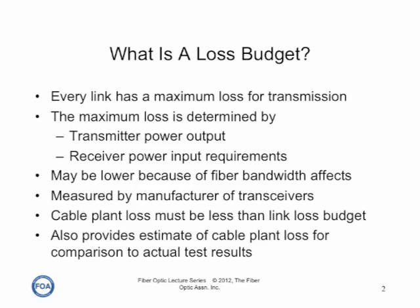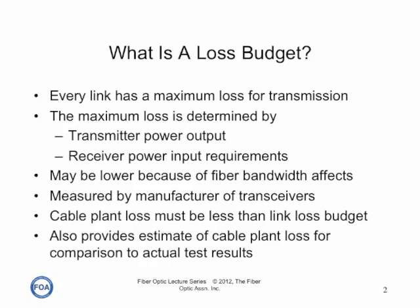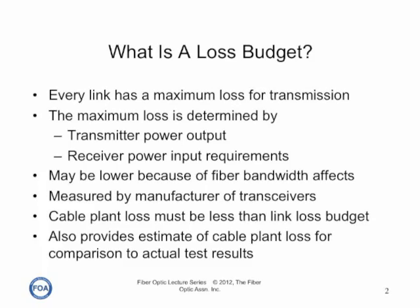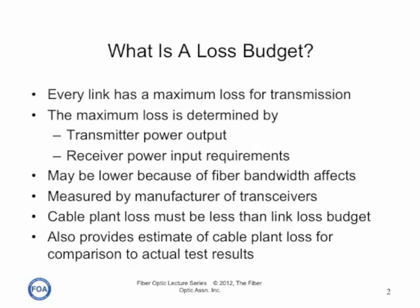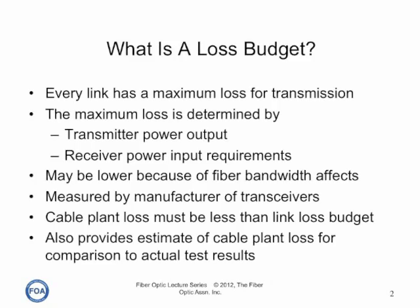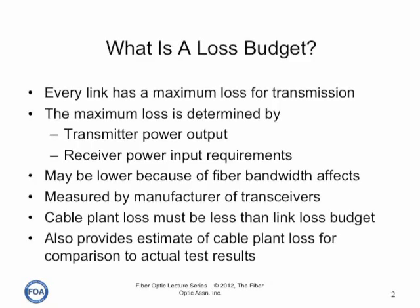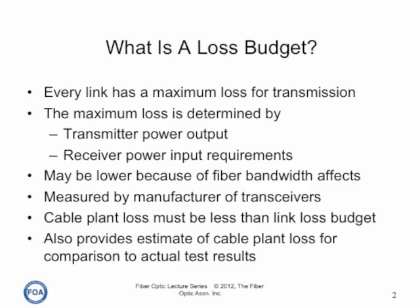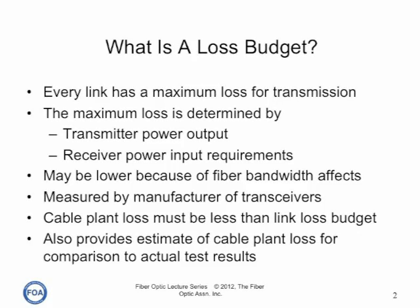A loss budget is a very important specification for a fiber optic link. It determines the maximum loss the link can tolerate for transmission. That loss is determined by the output of the transmitter and the required power at the receiver, although it may be lower because of fiber bandwidth effects on high-speed multimode or long single-mode links. The loss budget is established by the manufacturer of the transceiver, and the cable plant loss that you operate the link over must be less than that link loss budget.